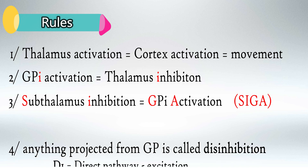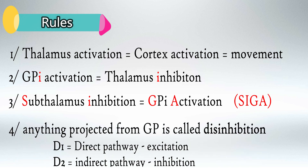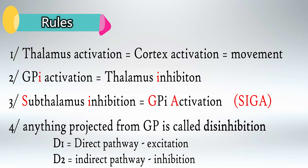Rule number 4: any step following globus pallidus internus or externus will be called disinhibition. Also memorize that D1 receptors are for the direct pathway, which is excitatory, and D2 receptors are for the indirect pathway, which is inhibitory.